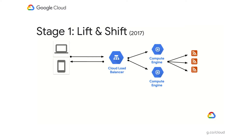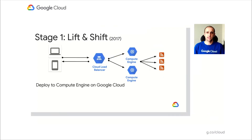Compute Engine offers virtual machines on Google Cloud where you can have Linux or Windows-based virtual machines. So we took our app and deployed it to a Windows server on Compute Engine. Then we configured it the way we liked, and we created what's called an instance template out of our VM. An instance template is kind of like a snapshot of your VM, and you can use it to create instance groups, which are identical VMs load balanced behind a cloud load balancer.